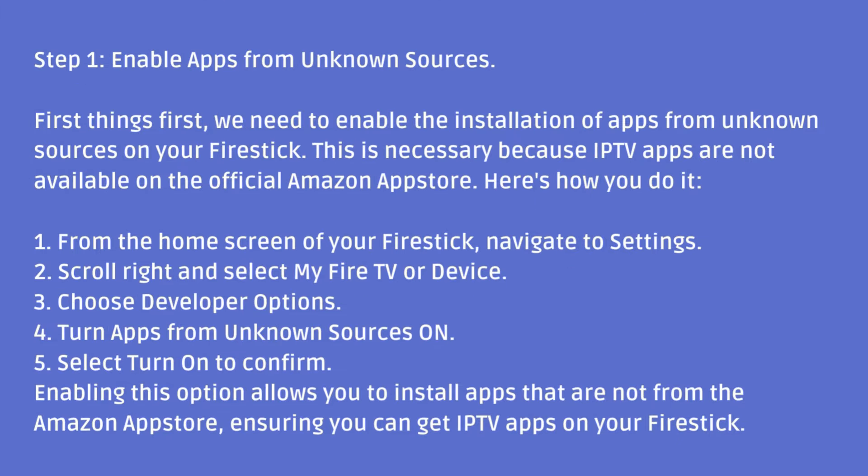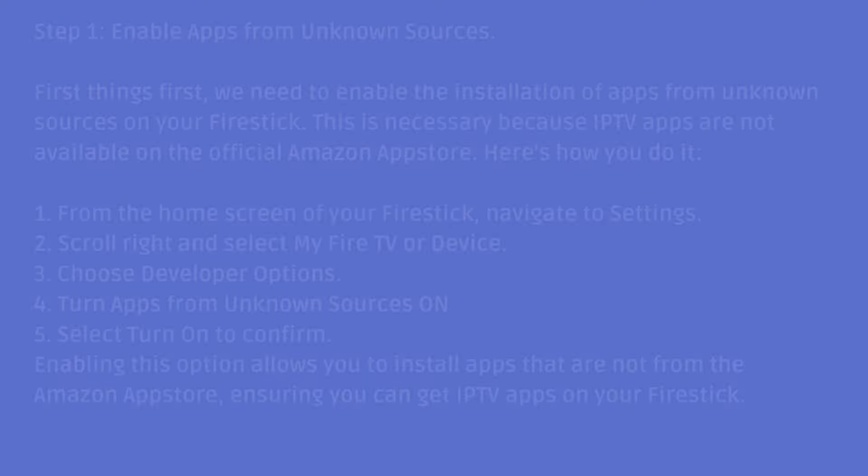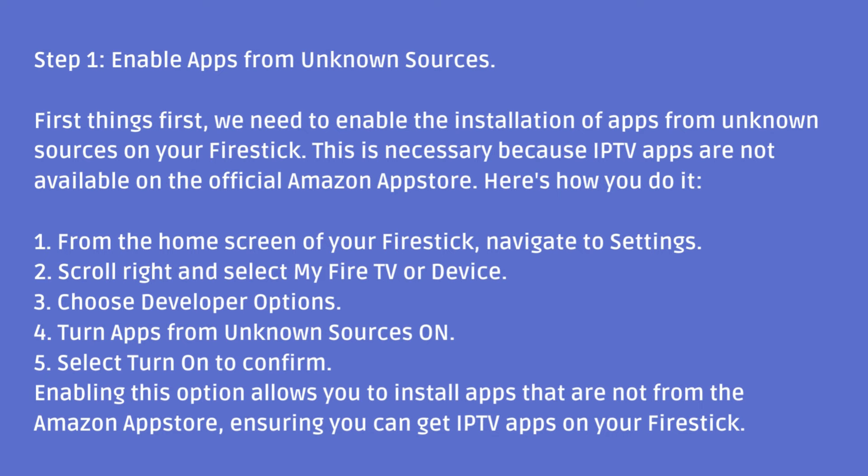Step 1: Enable apps from unknown sources. First things first, we need to enable the installation of apps from unknown sources on your Fire Stick. This is necessary because IPTV apps are not available on the official Amazon App Store. Here's how you do it.